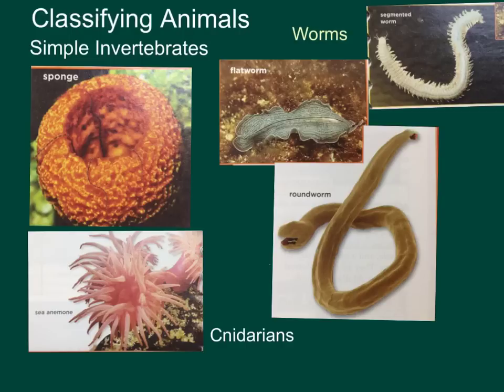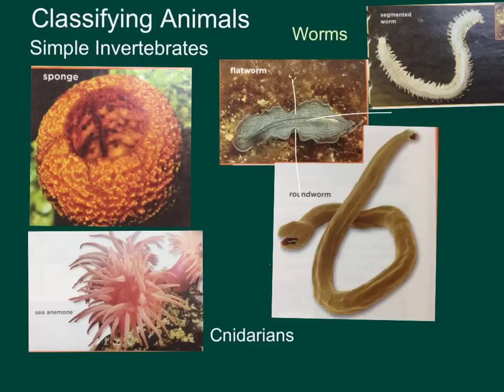Bilateral symmetry is a body plan that can be divided only along one plane. Look at this worm — if you cut it down the middle, you can only divide it into two. You can't cut it any other way. The prefix bi means two, like bicycle. So that's how you can remember: one line, two planes. Radial symmetry is a dot in the middle of a circle with many lines; asymmetrical means no symmetry.